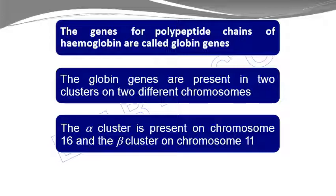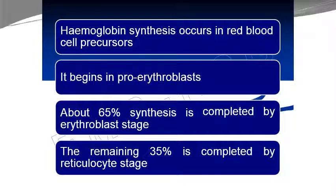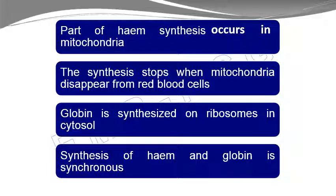Hemoglobin synthesis occurs in red blood cells. It begins at the pro-erythroblast stage, and by the erythroblast stage, 65% of hemoglobin synthesis is already completed. The remaining portion is completed at the reticulocyte stage. Part of the synthesis — specifically the heme group — also takes place in the mitochondria, and synthesis stops when mitochondria disappear from the mature red blood cells.